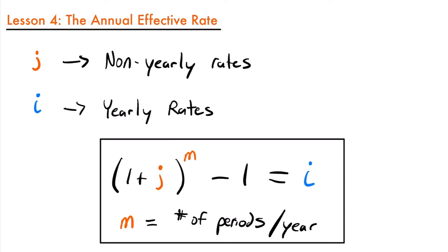This rate J could be taking place multiple times during the year, or every so many years — for example, interest that only accrues every two or four years. That's pretty rare, but we could come across it. So let's look at a few examples that use this formula to convert a non-yearly interest rate into an annual effective rate.